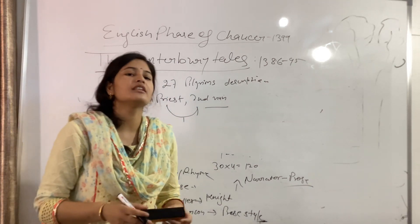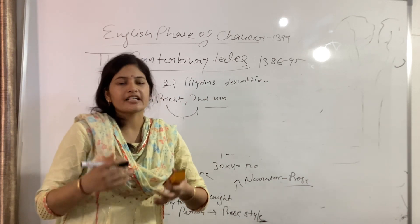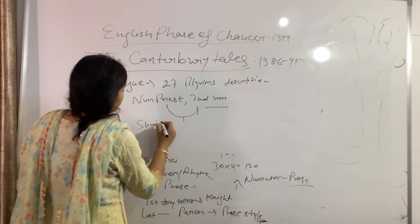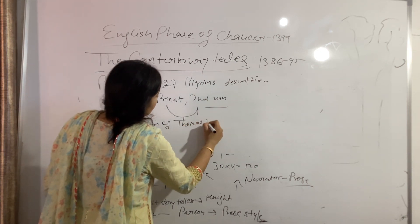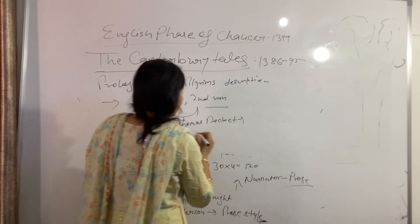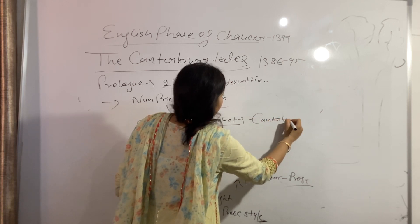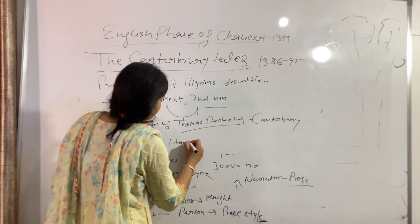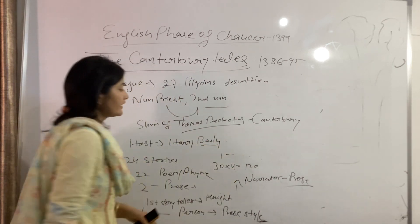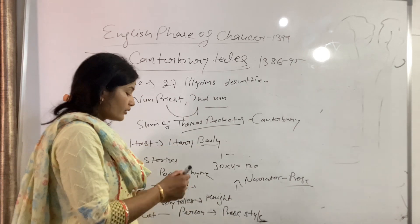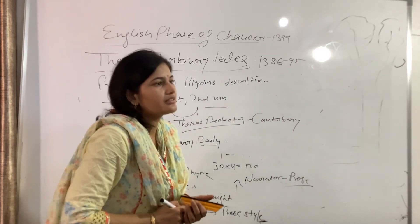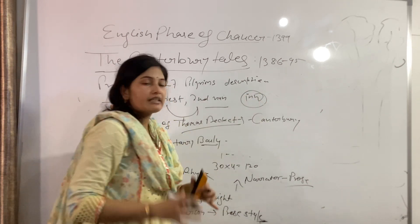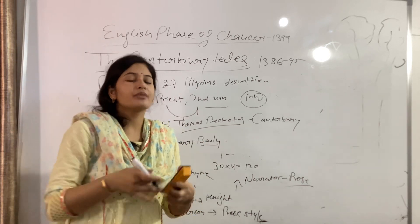In the prologue, all the pilgrims decide to visit the shrine of Sir Thomas Becket at Canterbury. The host of the group is Harry Bailey. Harry Bailey is the host, and from there they will travel to Canterbury.